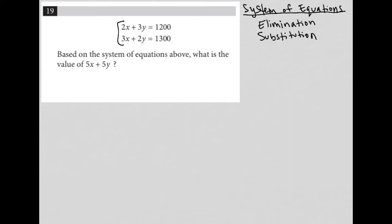Substitution is a useful method, but typically only if there's a variable in one of the equations that is already isolated, meaning there's no coefficient in front of the variable. When we look at what we have, we don't have that scenario. Every x and y has a number in front of it, which means we're going to be better served by using elimination.